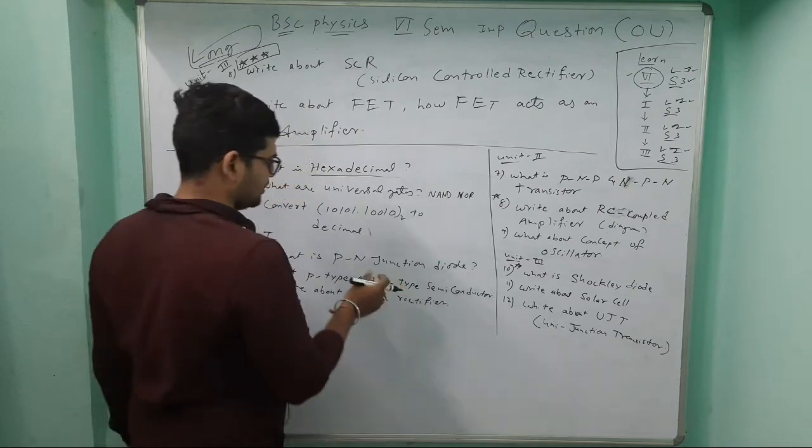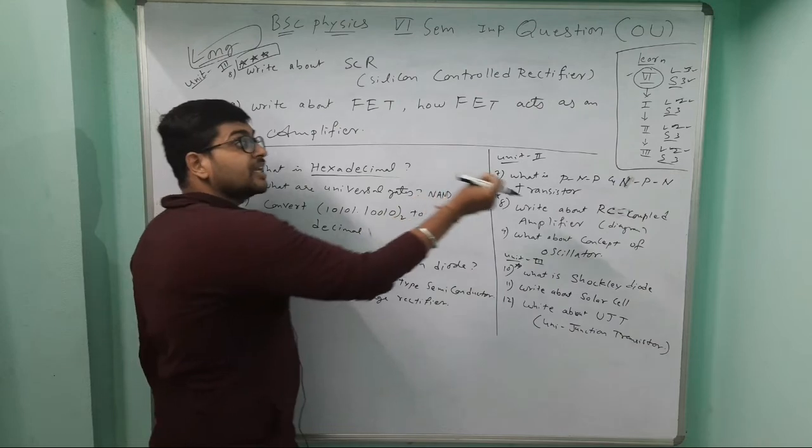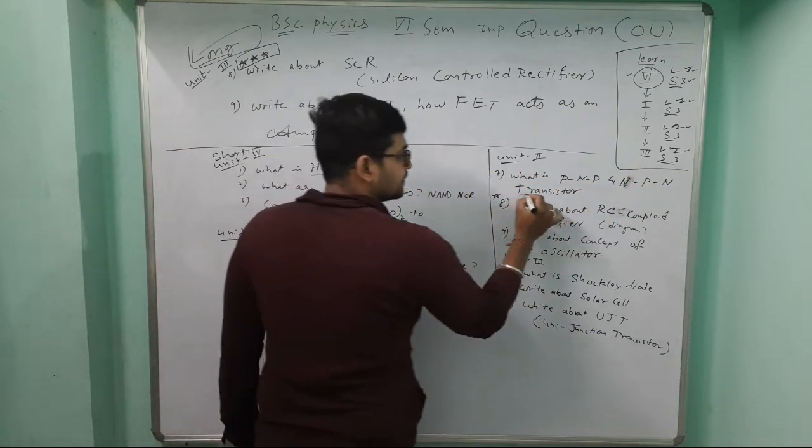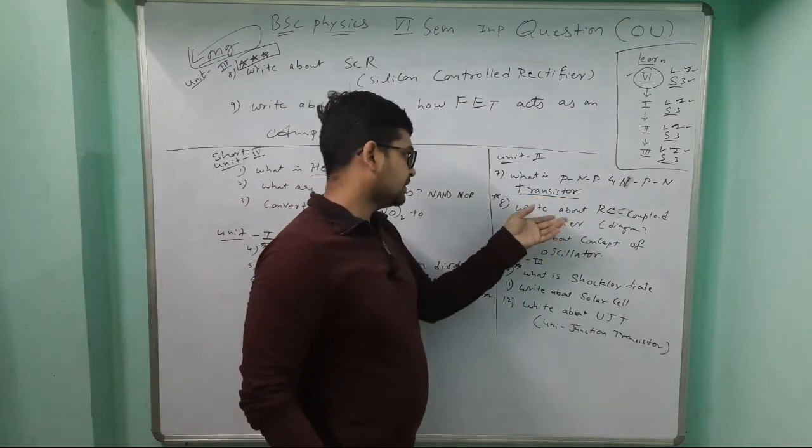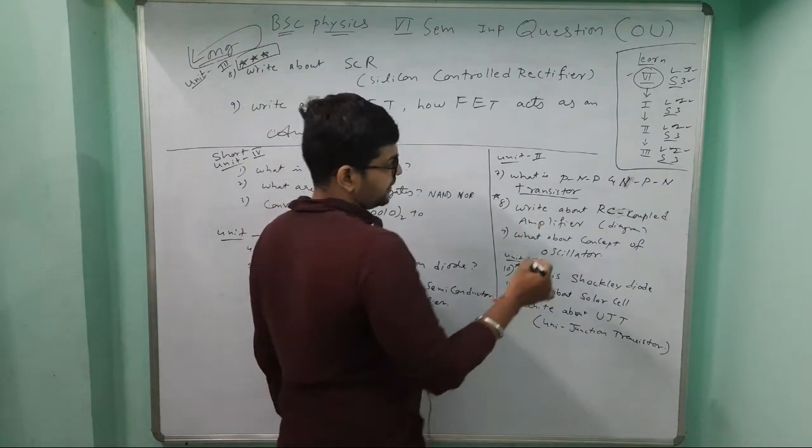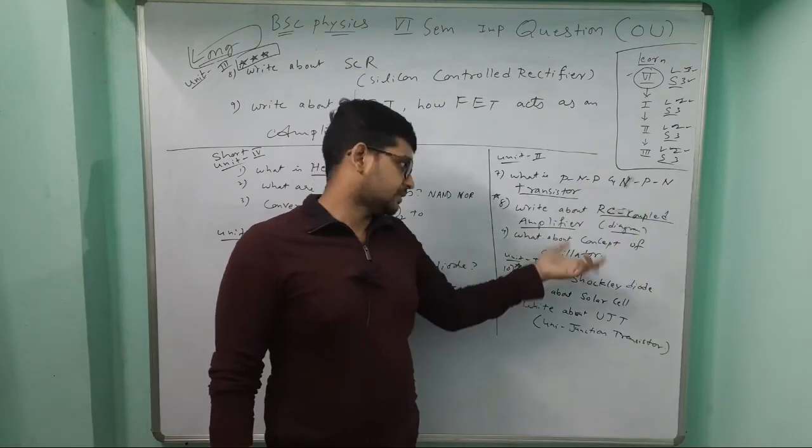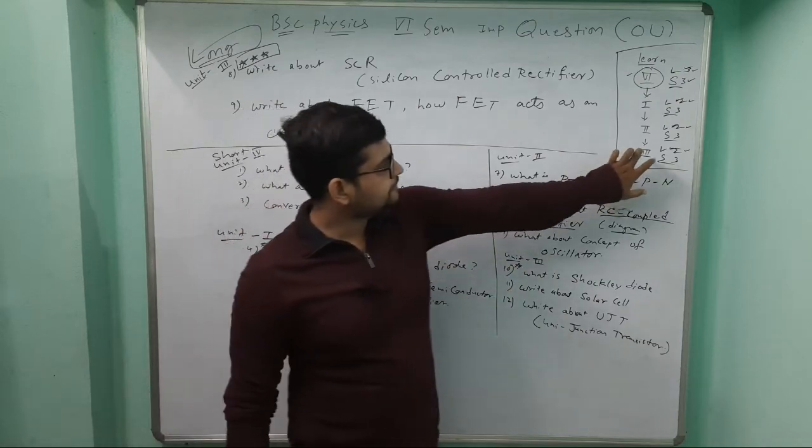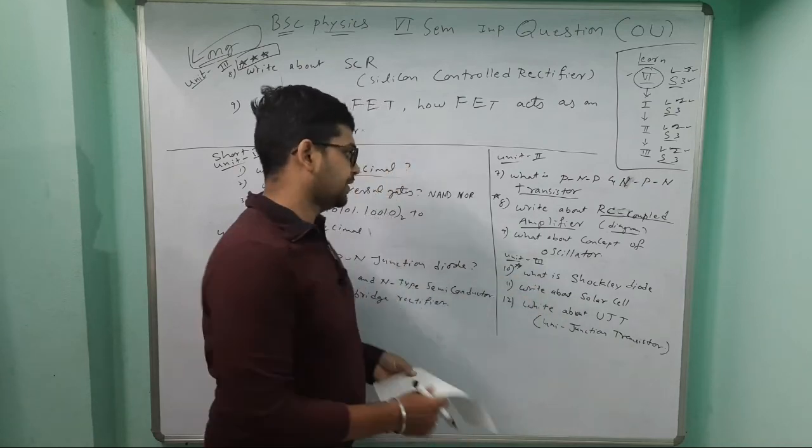Unit 2: Remember, if two semiconductors P-type and N-type combine, it's called diode. If three combine - NPN or PNP - it's called transistor. Next question: RC coupled amplifier - very important with diagram. Write about concept of oscillator.